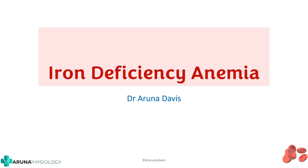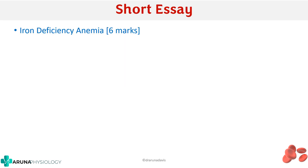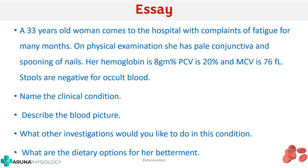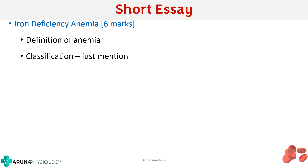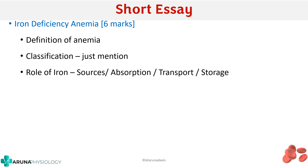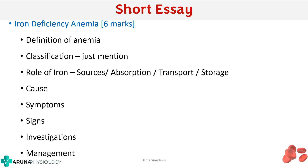In this video we are going to see about iron deficiency anemia. This question can be asked either as a short essay question of 6 marks or as part of an essay question. When asked as a short essay, you can start by mentioning the definition of anemia and its classification, then write about the role of iron — sources, absorption, transport and storage — in a concise manner. Then cover the causes of iron deficiency anemia, symptoms, signs, investigations, and management.